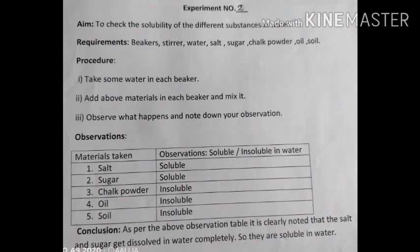Children, you have to write all these points in your practical book: Aim, Requirements, Procedure, Observation, and Conclusion. To perform this experiment we require the following materials: test tubes or beakers,